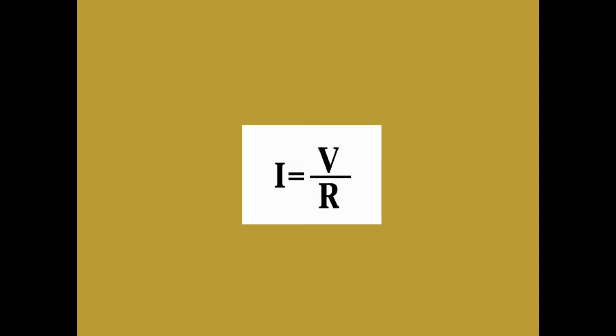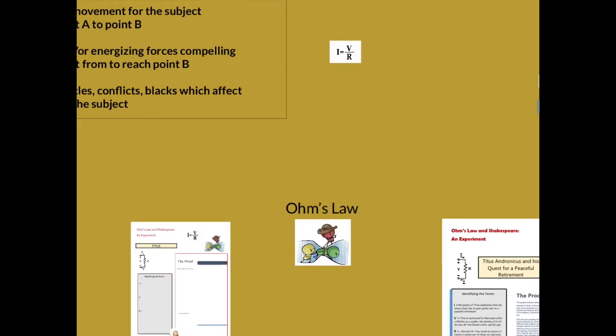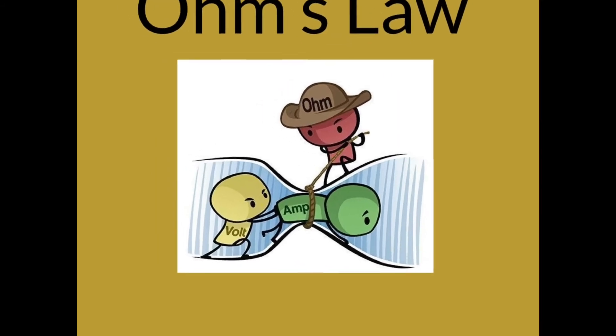We'll start with this basic formula that says there's a relationship that takes place between the current, the voltage, and the resistance of the system. Another way of looking at that, if you want to look at our graphic here.